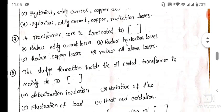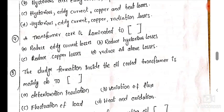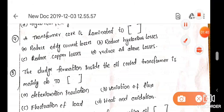Next: a transformer core is laminated to reduce eddy current loss, reduce hysteresis loss, reduce copper loss, or reduce all above losses. This is to reduce the eddy current loss, and the answer is A.